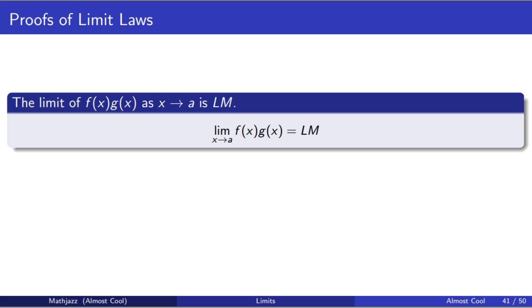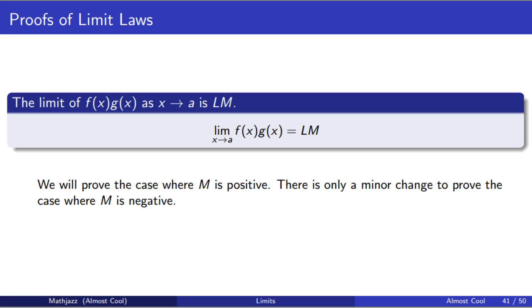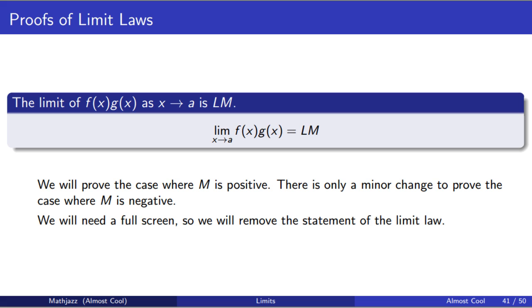We're going to prove that the limit of f times g as x goes to a is l times m. We're going to prove the case where m is a positive number. It's a minor change to prove the case where m is a negative number, and we will leave that as an exercise for the viewer. We're going to need a full screen for this proof, so we're going to remove the statement of the limit law and start with a clean screen.